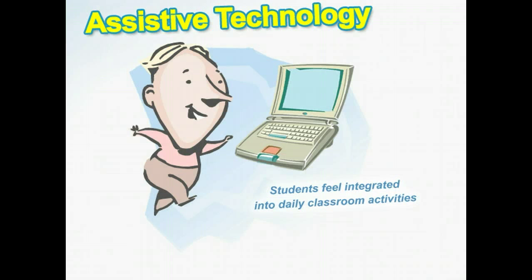It's a good idea for schools to invest in assistive technologies to aid students with special needs. They have been shown to help such students achieve independent learning, giving them confidence and allowing them to be more productive. Furthermore, it's important for disabled students to feel integrated into daily classroom activities and to be able to socialize with a wide range of peers.